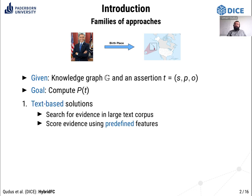The first family is text-based approaches. These search for evidence in a large text corpus, for example Wikipedia, or Google or Bing search APIs. They convert the assertion into the form of a sentence, send it as a query to the text corpus, and retrieve pieces of evidence. Evidence is then scored based on features predefined by domain experts. An example of a predefined feature is measuring the distance between the subject and object entity in the retrieved document. If the distance is greater than a threshold value, the assertion is false; otherwise true.